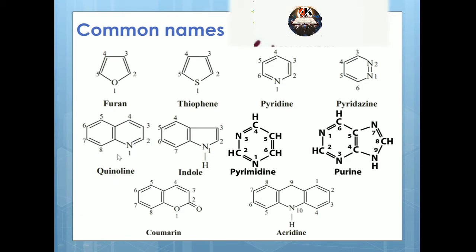Quinoline is very important for anti-malarials like aminoquinoline — remember, it is benzene fused with pyridine. Next is indole; there are a number of indole alkaloids like mitragynine and yohimbine, selective alpha-2 antagonists. The numbering of indole starts from nitrogen: 1, 2, 3, 4, 5, 6, 7.